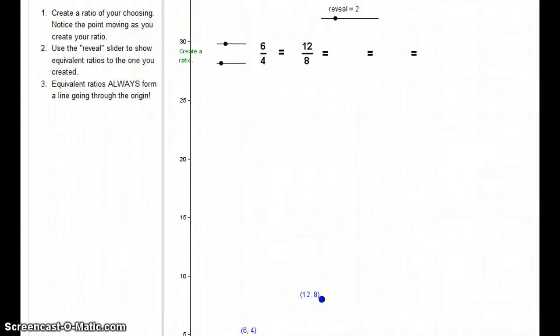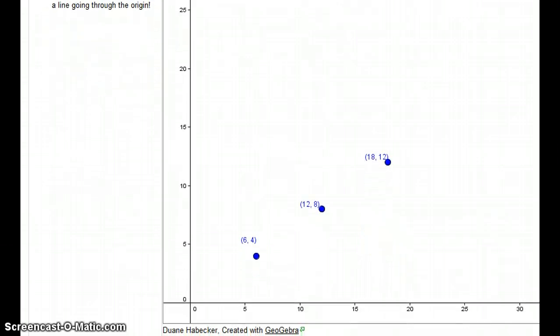What will happen if we reveal a third equivalent ratio? 18 is the numerator and 12 is the denominator. What's happening here? 6 is being multiplied by 3 to get to 18, and 4 is being multiplied by 3 to get to 12. So 18 is the x-coordinate and 12 is the y-coordinate. Do you see a pattern being established here?